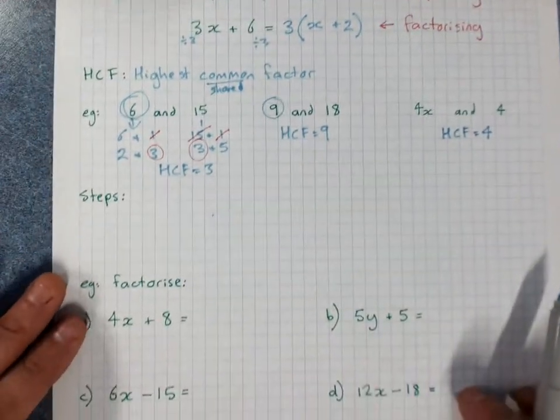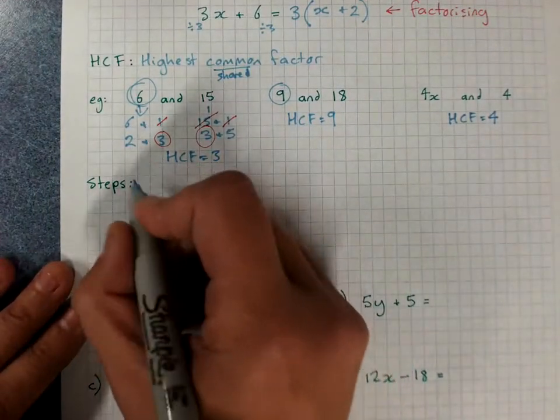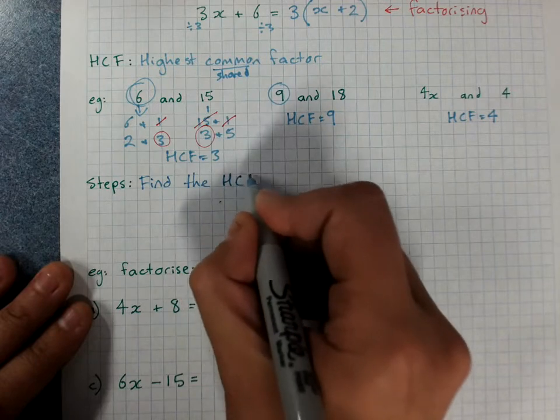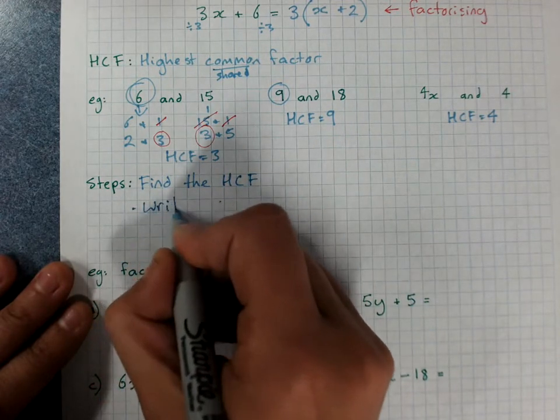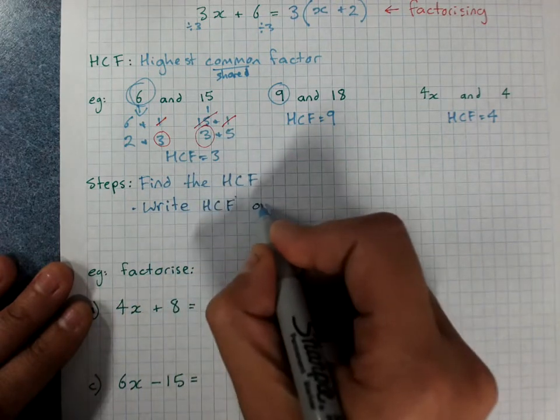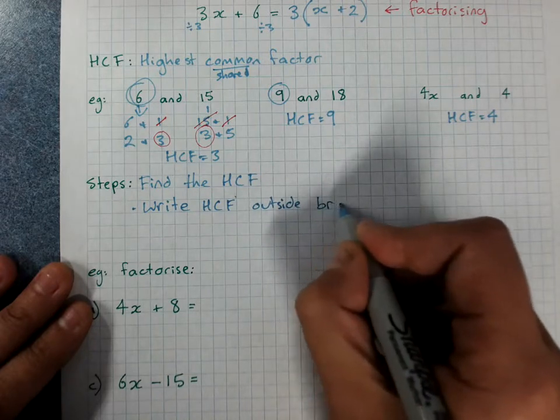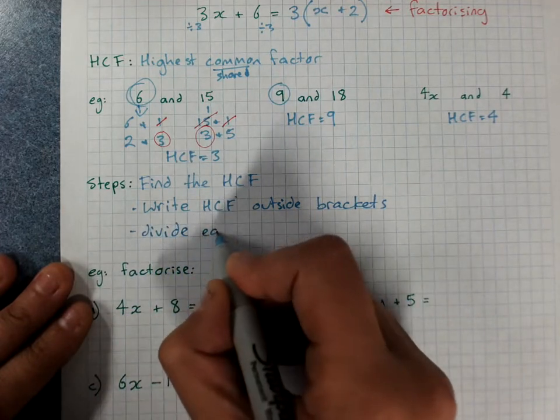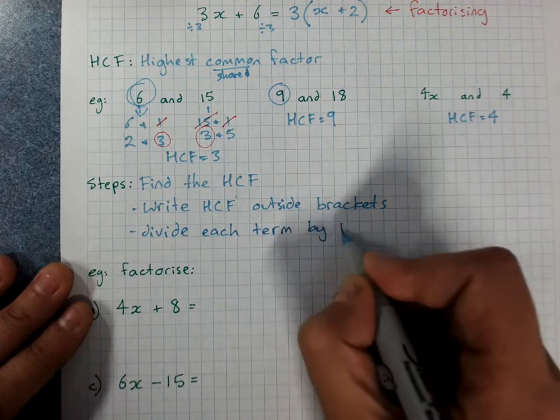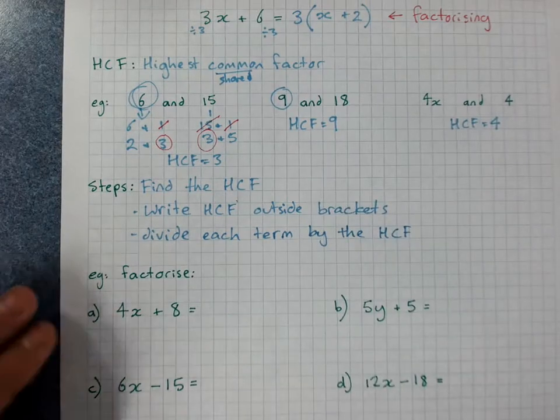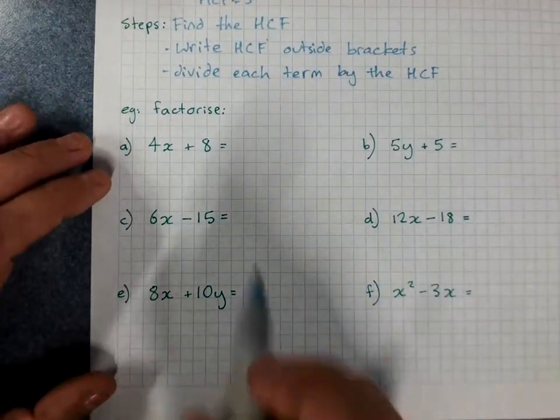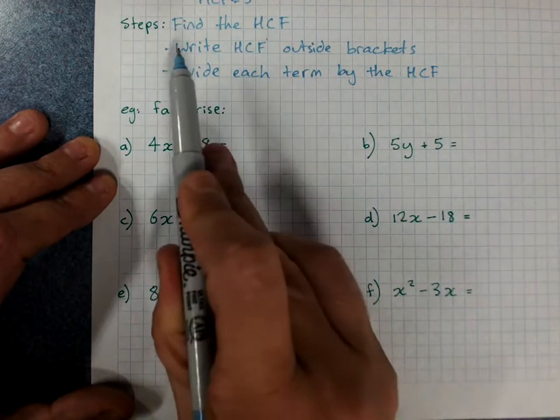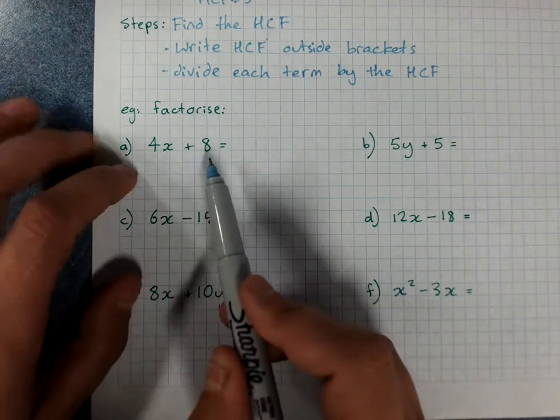We'll practice those some more. So the steps when I'm factorising. The first thing I have to do is find the HCF, the highest common factor. I write the HCF outside some brackets. And I divide each term by the HCF. Let's follow these steps.